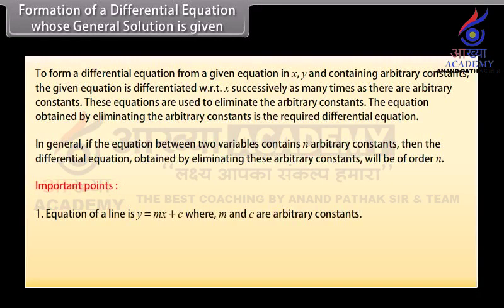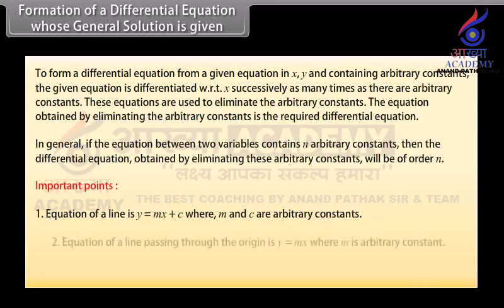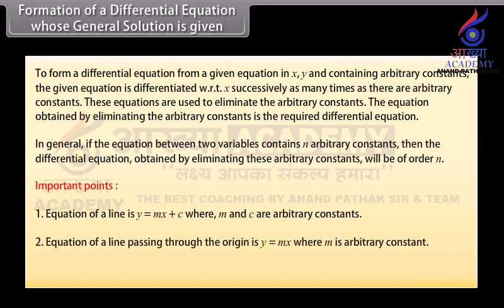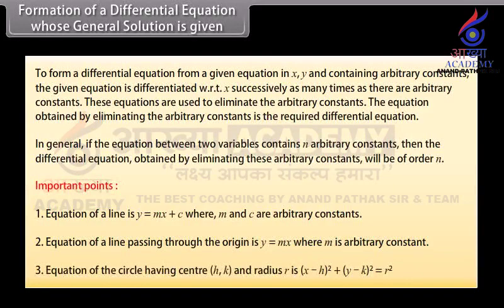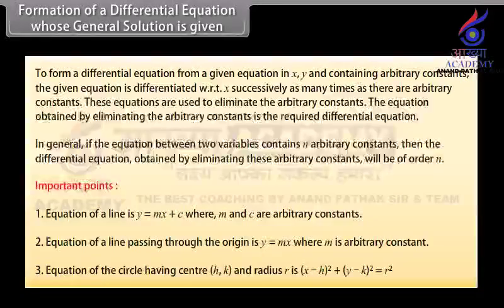Important points. The equation of a line is y = mx + c, where m and c are arbitrary constants. The equation of a line passing through the origin is y = mx, where m is an arbitrary constant. The equation of a circle with center (h, k) and radius r is: (x − h)² + (y − k)² = r².